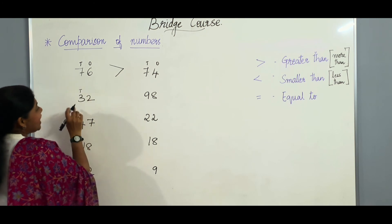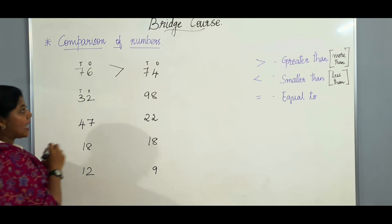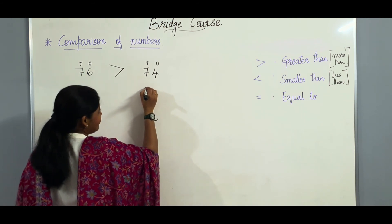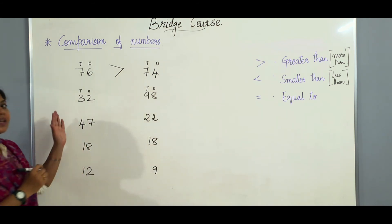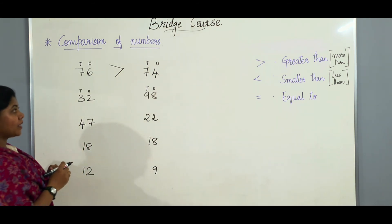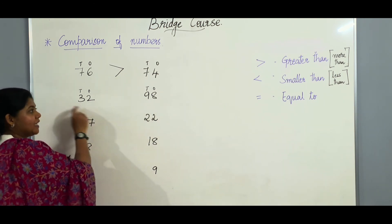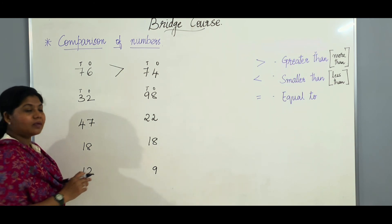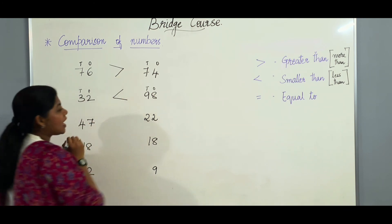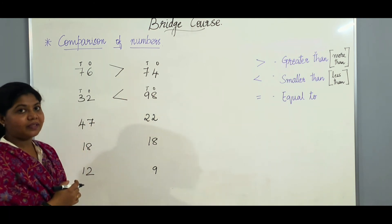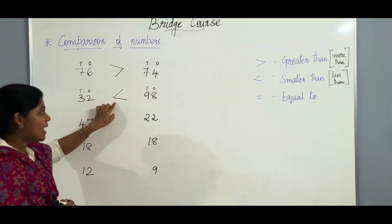Now let us go to the next example. In the tens place we have 3 and in the ones place we have 2. And here in the tens place we have 9 and in the ones place we have 8. It is very easy to find out — because in the tens place here it is 9 and 9 is greater than 3. So the crocodile will be eating the number 98. We will be reading this as: 32 is less than 98.